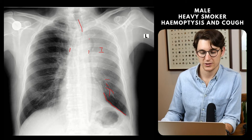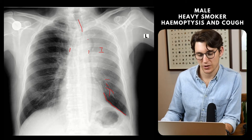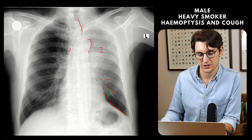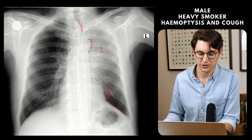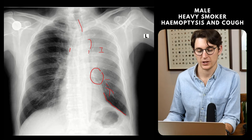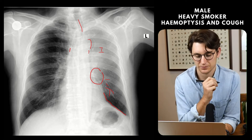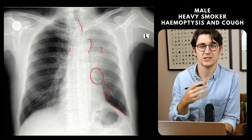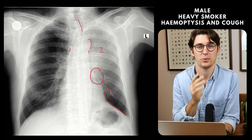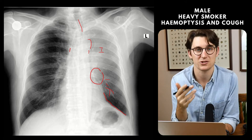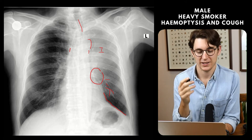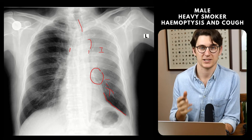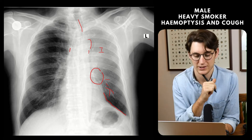There's a luftsichel sign with this accentuation of the lateral border of the aortic arch by this lucency here, as well as silhouetting of the superior aspect of the left heart border by the opacity itself. These features are in keeping with left upper lobe collapse, and given the patient's history and clinical presentation, the likely cause is an obstructing mass or malignancy in the lung.